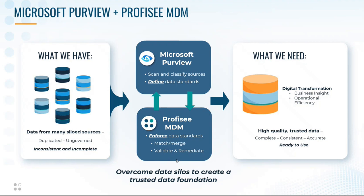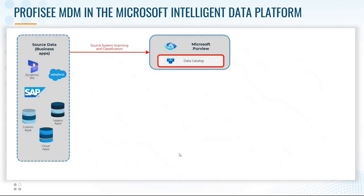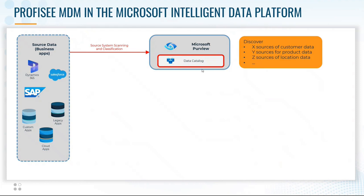So let's get into the data architecture itself. The first step is that Purview can be used to scan source systems and classify the information, as well as many other things, but essentially create a data catalog that tells us where key information is located — what are the sources of customer data, product data, location data, and so on.